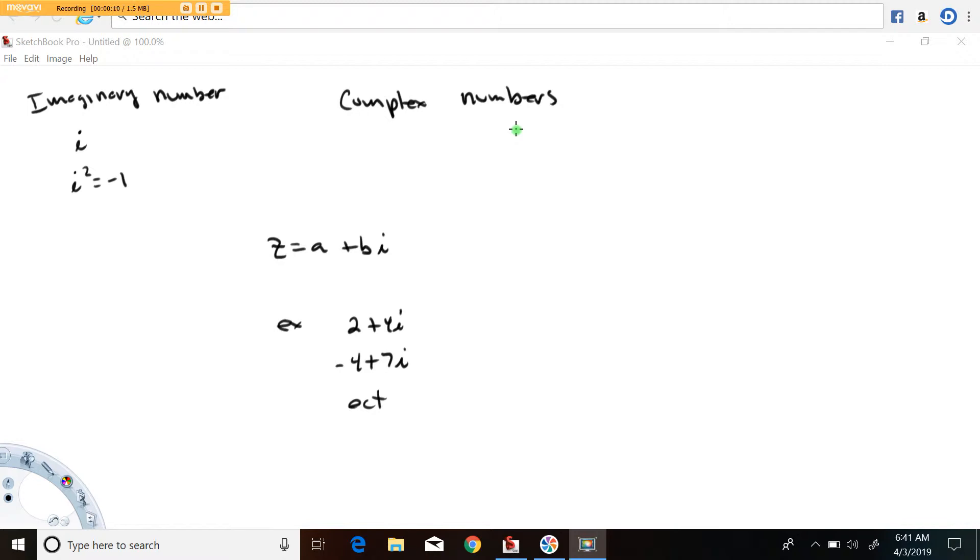Before we start talking about complex numbers, we're going to talk about the imaginary number i. The imaginary number i is a value that solves this equation, i squared equals minus one.